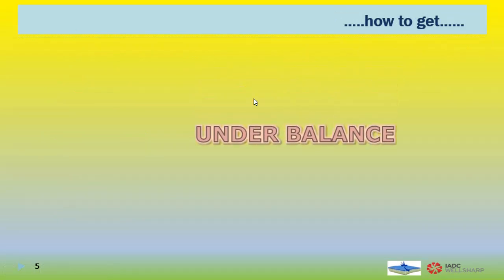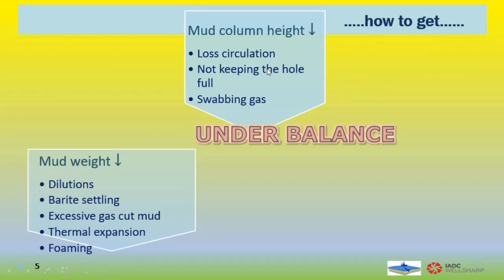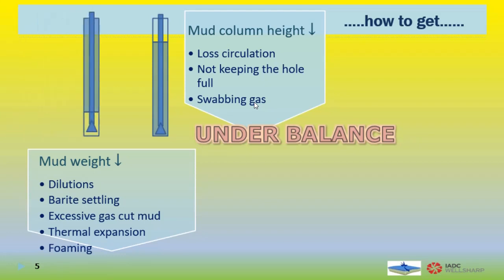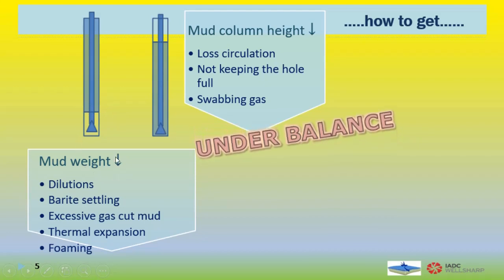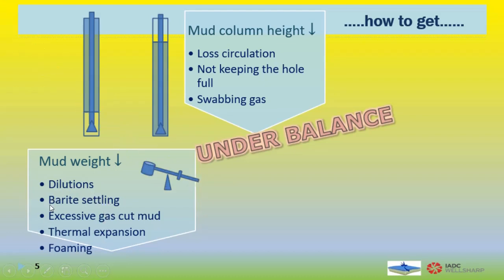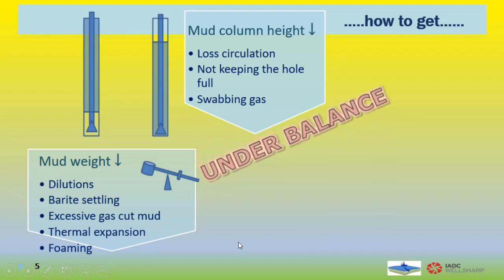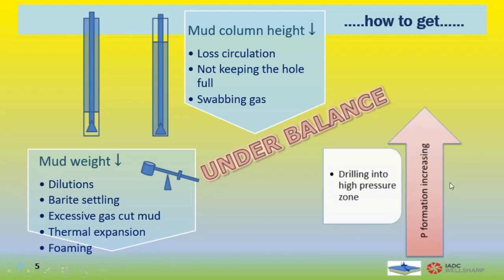How the well becomes under-balanced. Under-balance conditions could be due to decreasing mud column height — mainly due to loss circulation and not keeping the hole full, so the top parts of the hole are empty, decreasing the mud column. Or swabbing in some gas, replacing mud at the bottom parts of the well with lighter fluid. Swabbing is the main cause of well kick incidents worldwide. Under-balance could also be due to decreasing mud weight — dilutions and contamination, barite settling, excessive gas-cut mud, thermal expansion, and other factors like foaming.